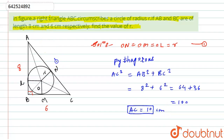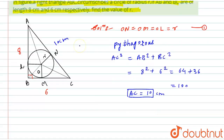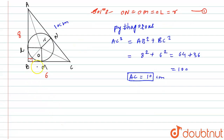Now to find the radius of the circle, I will draw lines from the center O of the circle to vertex A, then to vertex B, and then to vertex C. This creates three smaller triangles: triangle OAC, triangle OAB, and triangle OBC.